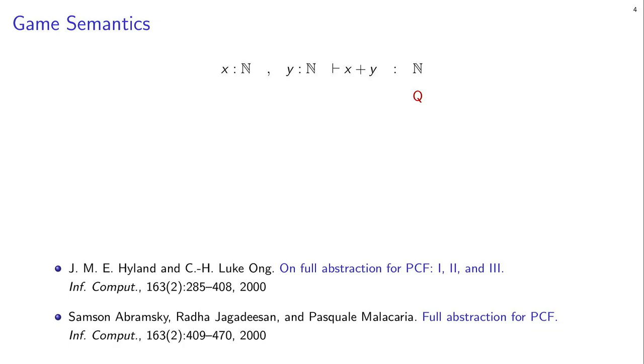Now the program, assuming plus is computed from left to right, will play a move here - a request for a value on X. Now it's opponent's turn to play, may provide a value. Then we call Y, opponent may give a value, and finally we can return. So of course this is a very naive example, but there is a well-developed theory. This is a denotational semantics. It gives a Cartesian closed category and so on and so forth, which really fits into the general methodology of denotational semantics.